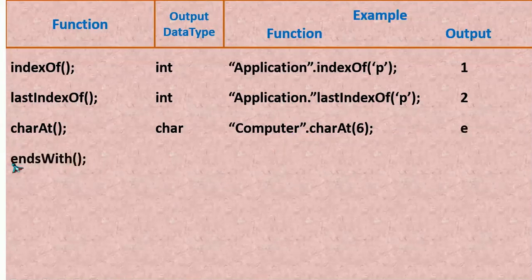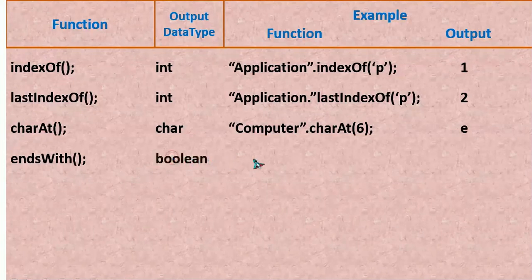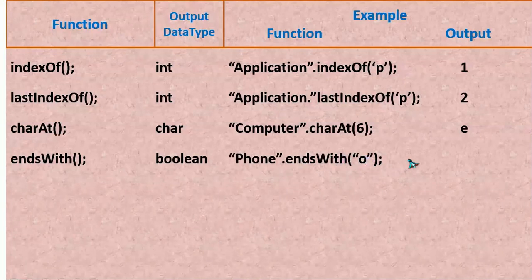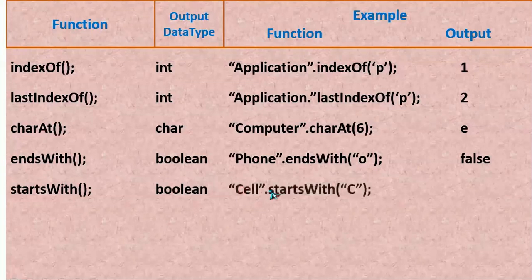Next we have endsWith(). It is going to check whether the string ends with a particular string; the output data type is going to be true or false — that is Boolean. For example, "phone".endsWith('O') is going to be false. Next we have startsWith(), which again returns a Boolean indicating whether it is true or not. "Cell".startsWith('C') — C is right there — so it is true.